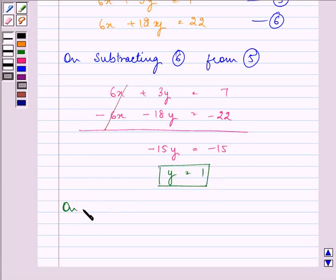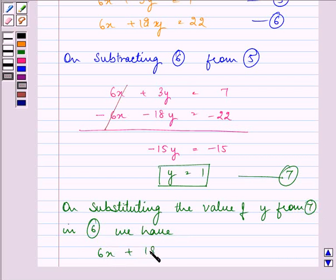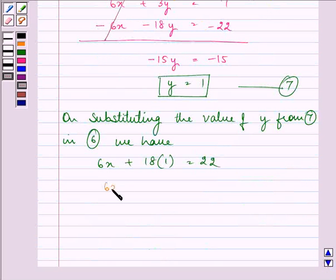Now, on substituting the value of y from 7 in, let's say, 6, we have 6x plus 18 multiplied by 1 is equal to 22. 6x is equal to 22 minus 18.